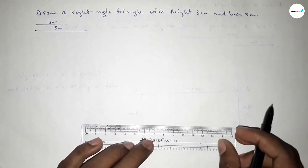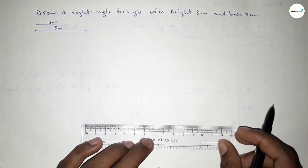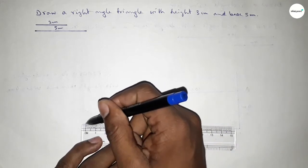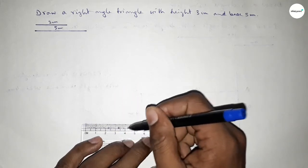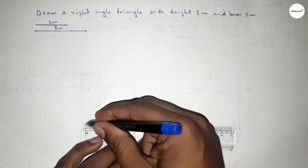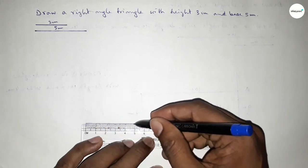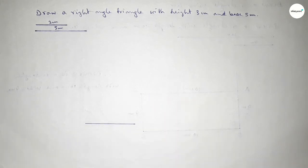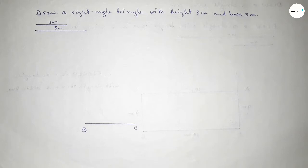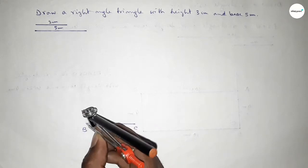Now we draw the base line of length 5 centimeter, which is the base of the triangle. We take point B on one end and point C on the other end. Now we have to draw a 90 degree angle at point B.